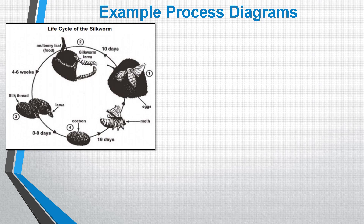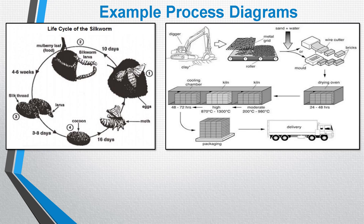You could also face something like this flowchart, which shows how bricks are produced. This is a man-made process and it's linear in nature, meaning there's a clear start and a clear finish. Again, we've got arrows and labels giving us extra information about the different steps of the process, so you could be faced with something like that.